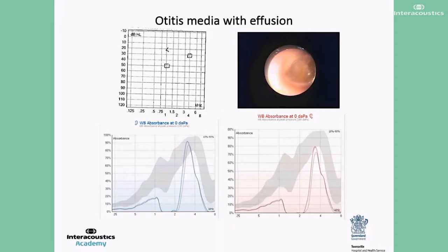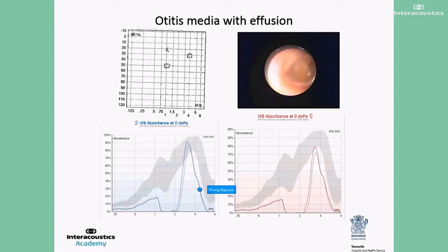The wideband absorbance traces from the right and the left ears are given in this slide. The VRA showed a moderate sloping to a mild conductive loss in the better ear. In otitis media with effusion, one of the common patterns is that the wideband absorbance is reduced in the low to mid frequencies, and a sharp peak is seen between 3 and 4 kHz. Ambient and pressurized conditions are affected in a similar way with otitis media with effusion.